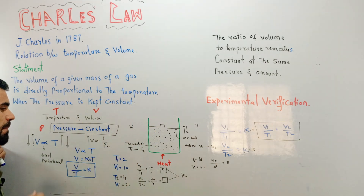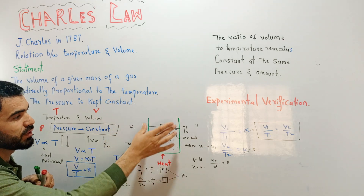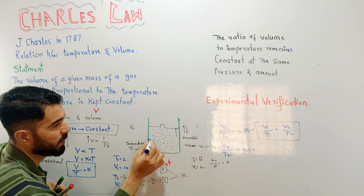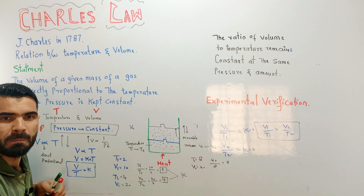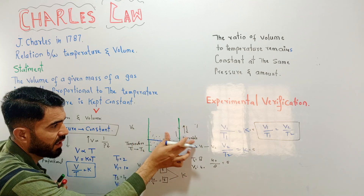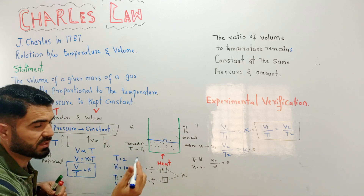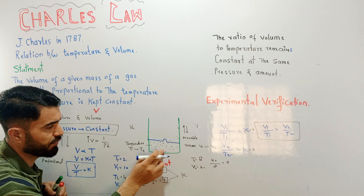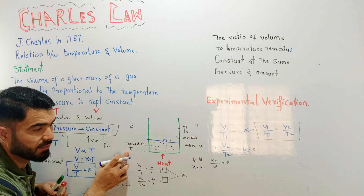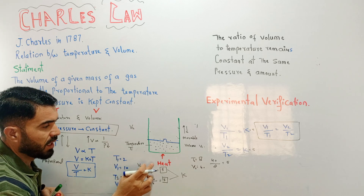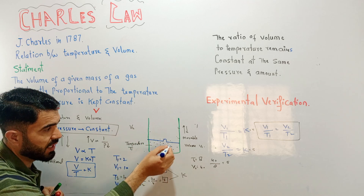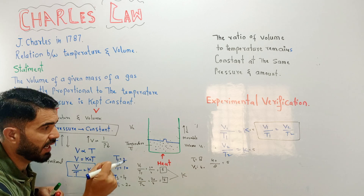In Boyle's Law, the relation was between volume and pressure. This law says that if you have a container with some amount of gas at a fixed volume V1 and a fixed temperature T1, if you provide heat to that gas, the gas molecules will receive energy and start pushing the piston.